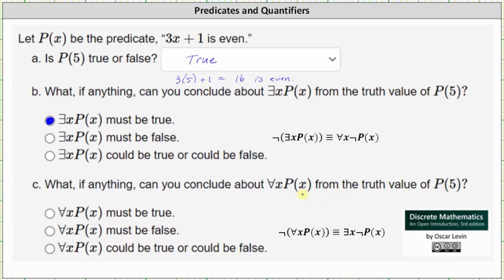And therefore, we select the third option. In order to know whether for every x, P of x must be true, again, we would have to know the domain of discourse. I hope you found this helpful.